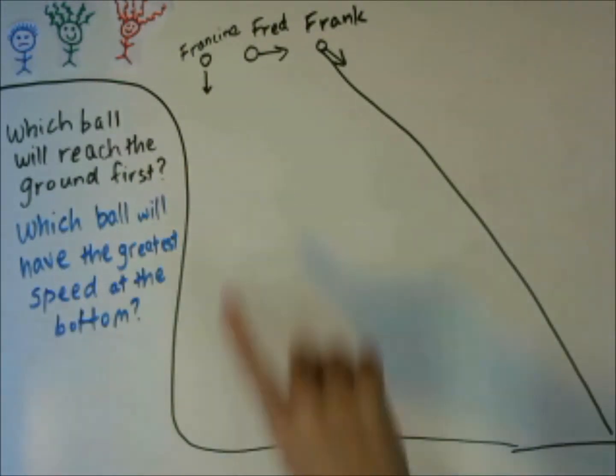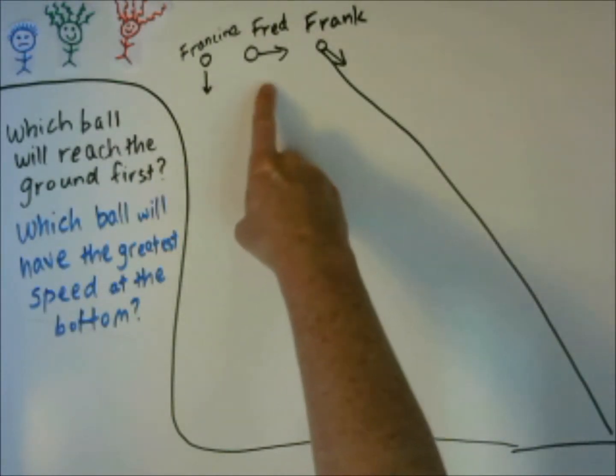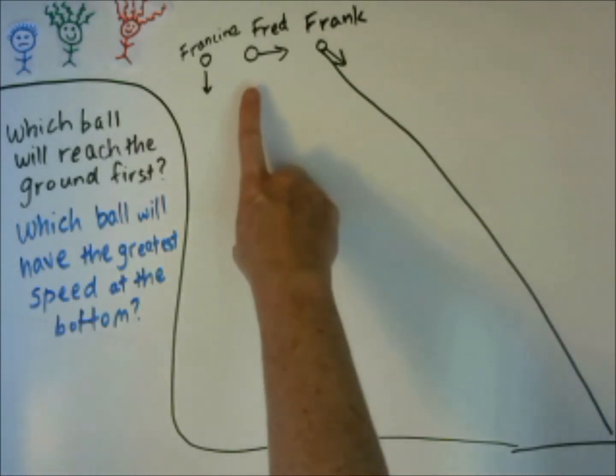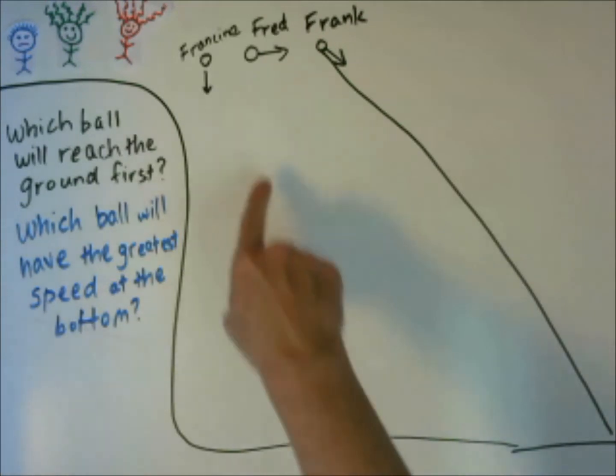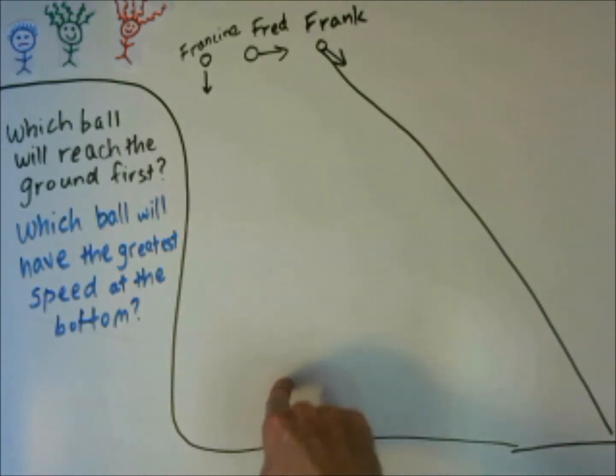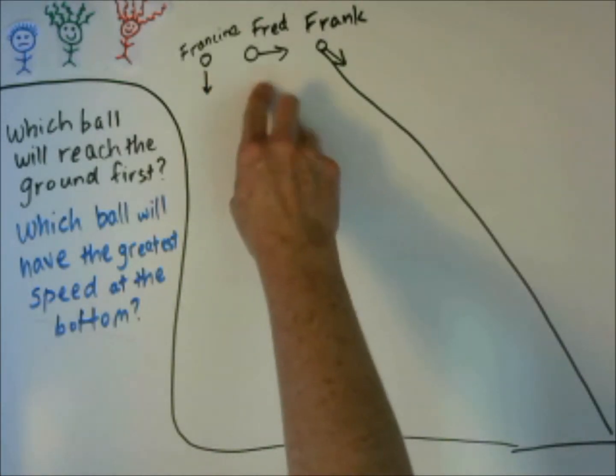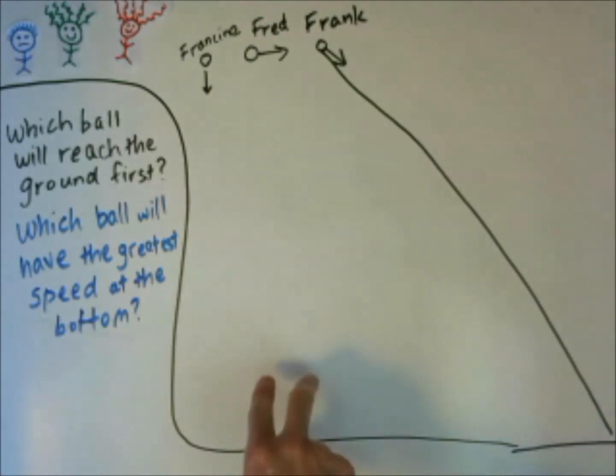From projectile motion, we know that Francine's ball and Fred's ball both start with an initial velocity in the y direction of zero. Both are traveling the same distance, and both have the same acceleration of gravity. So both Francine and Fred's balls will hit the ground at the same time.